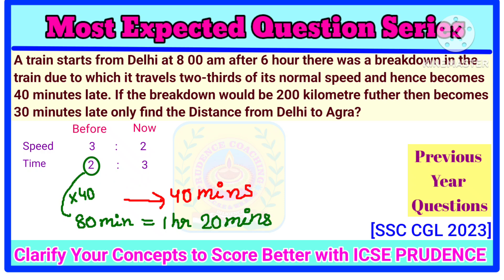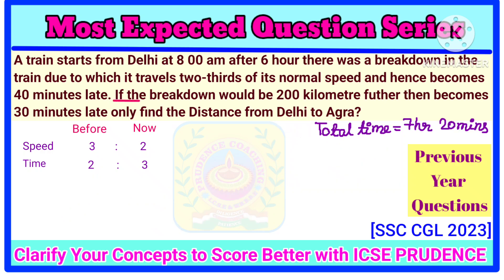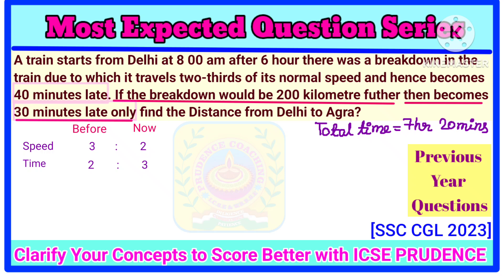Since 6 hours of journey had already been completed, we add: 6 hours plus 80 minutes gives us 7 hours 20 minutes. That is the total time taken by the train if there was no breakdown. Now for the second case: if the breakdown had occurred 200 km further, it would be only 30 minutes late instead of 40 minutes late — meaning 10 minutes are saved if the accident occurred 200 km further.